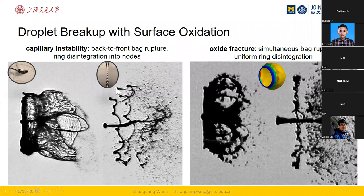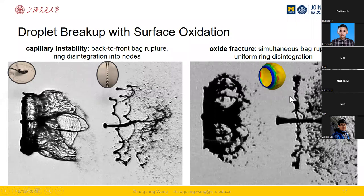For metal droplet breakup, the bag structure breaks almost simultaneously all over the bag, and the rim also disintegrates quite uniformly. All these indicate that for metal droplets, breakup is caused very likely by mechanical fracture of the surface oxide rather than capillary instability. This project is still ongoing and very challenging to study because the oxide film is so thin and the bag structure is also very thin, making reliable analysis difficult — but progress seems promising.